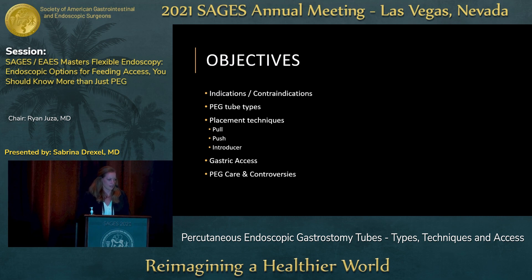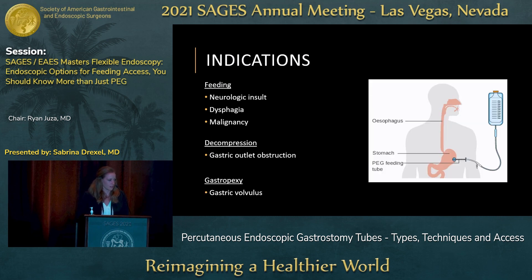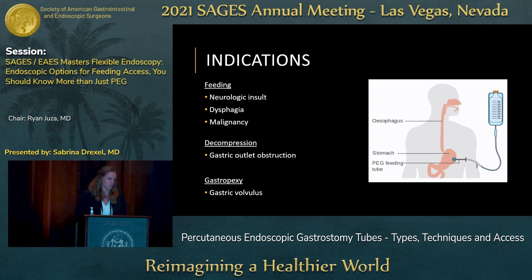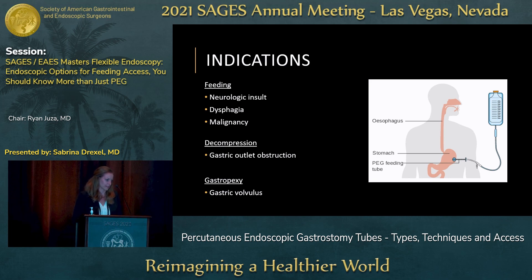The three main indications are for feeding, decompression, and gastropexy. For feeding, most commonly it's patients that have had some type of neurologic insult such as a stroke or traumatic brain injury, or have dysphagia from other reasons such as ALS or other disorders. ENT and esophageal malignancies can also be an indication for PEG tube placement for feeding access. Decompression is often a palliative procedure in patients with malignant bowel obstruction causing gastric outlet obstruction.